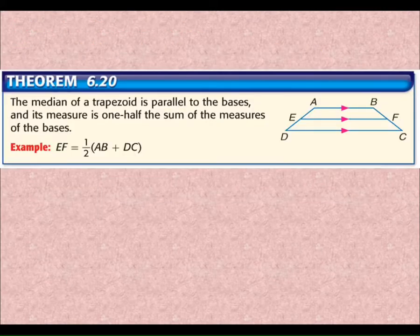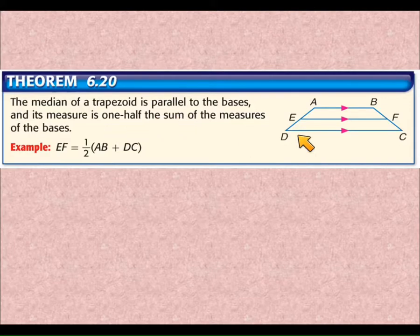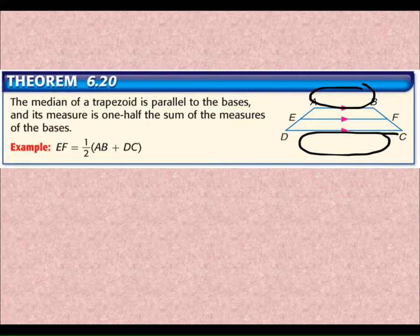This is the big theorem for trapezoids. The median of a trapezoid—so again, that's the piece that runs from the midpoint of one leg to the midpoint of the other. The median is parallel to the bases, and its measure is one half of the sum of the bases. So if you add up AB and DC, and divide that number by two, or half of that number, that's how long EF is.